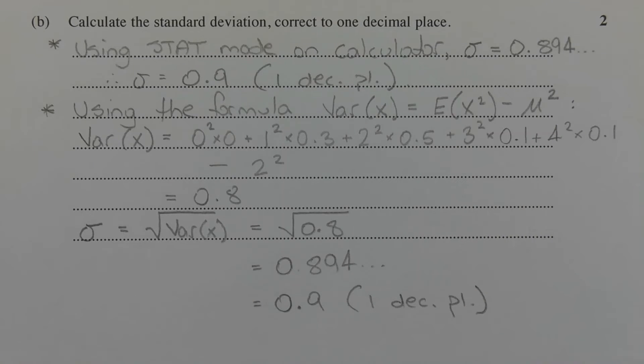Applying this formula, we get var x is equal to 0 squared times 0, so that's the square of the score multiplied by its associated probability, plus 1 squared times 0.3, plus 2 squared times 0.5, plus 3 squared times 0.1, plus 4 squared times 0.1, minus the expected value of x squared. So that's minus 2 squared, and this 2 here we found in part A. So the variance of x evaluates to 0.8.